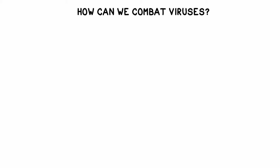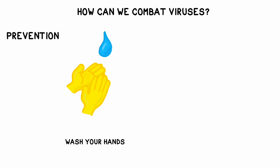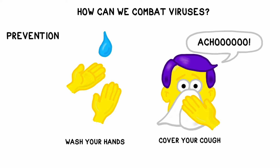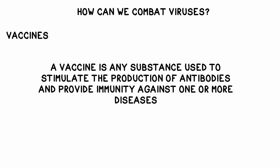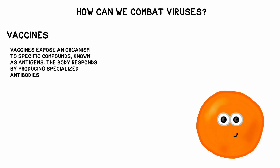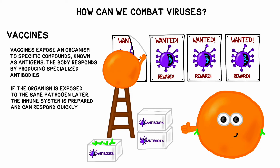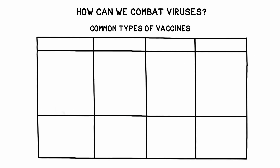So how can we fight back against viruses? The simplest and most cost-effective method is to avoid contracting a virus in the first place. Wash your hands with soap and water before eating or touching your face, and try to cover coughs and sneezes with a tissue or your elbow instead of your hand to avoid spreading germs to others. Vaccines are also another extremely effective way to prevent virus infections. As a general rule, vaccines expose an organism to specific components known as antigens, which activates the immune system. Our bodies then mount an immune response, including the production of specialized antibodies. If we're exposed to the same pathogen later on, the immune system is able to target the virus very quickly. There are many types of modern vaccines, but the most common include attenuated, inactivated, subunit, and toxoid vaccines.